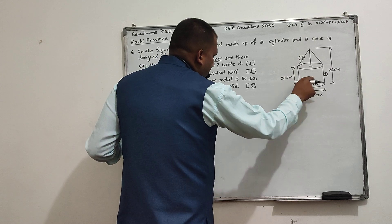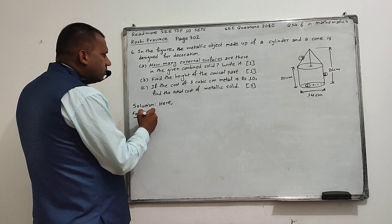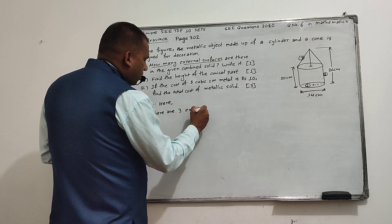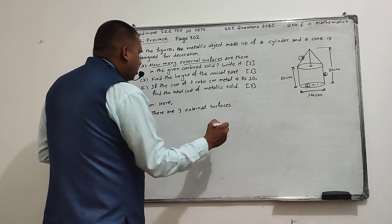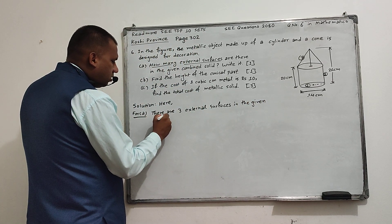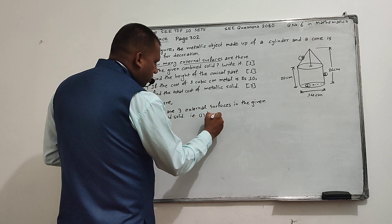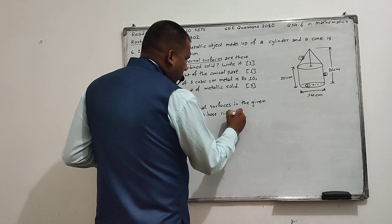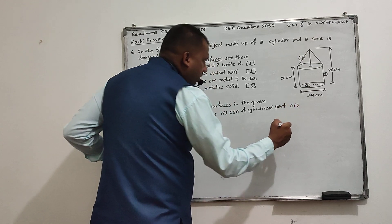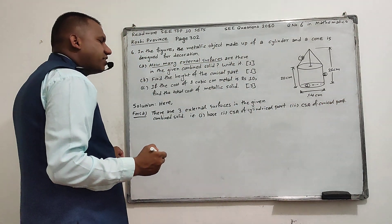The first surface is the base, the second is the curved surface area of the cylinder, and the third is the curved surface area of the cone. So there are 3 external surfaces in the given combined solid: number 1 base, number 2 curved surface area of cylindrical part, number 3 curved surface area of conical part.